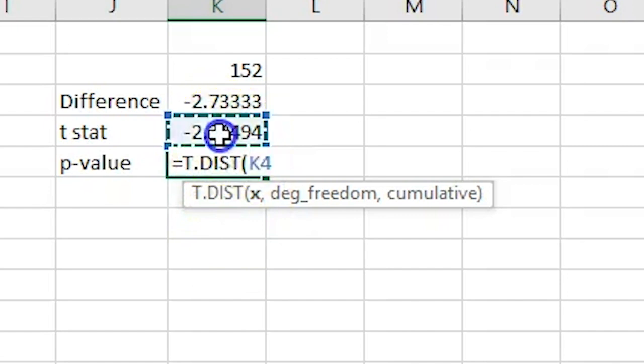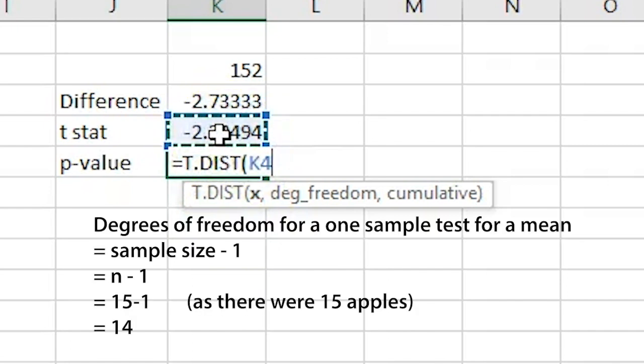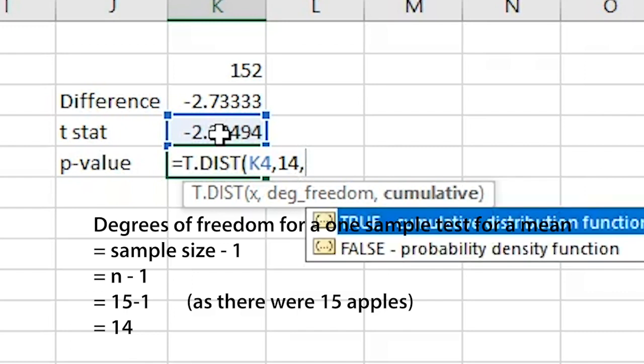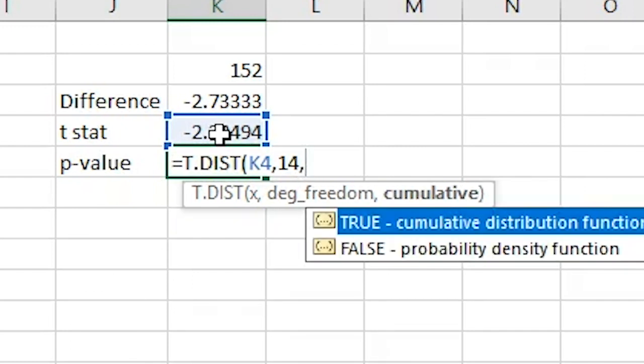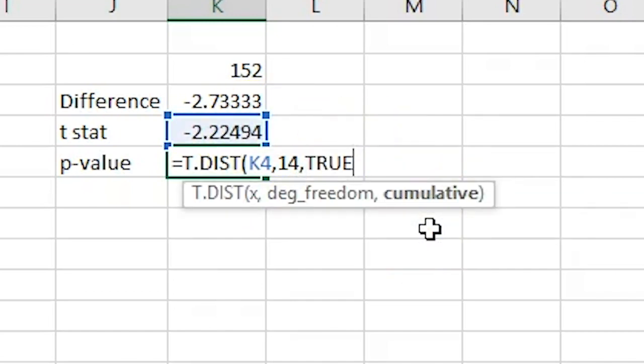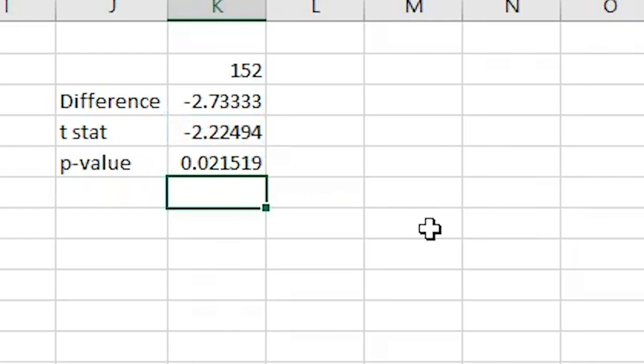The degrees of freedom for a one-sample test for a mean is the sample size n minus 1, in this case 15 minus 1, which gives 14. We use the t-dist function to find out what the probability is. Not surprisingly, or happily, the probability is 0.021519, the same as the p-value we found previously.